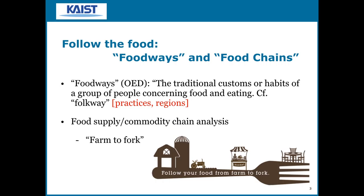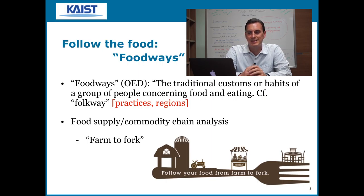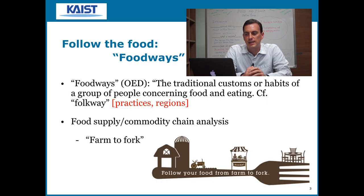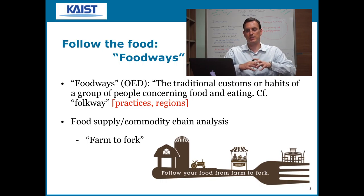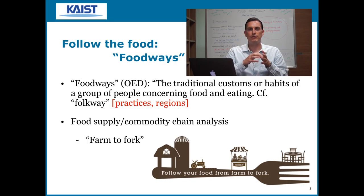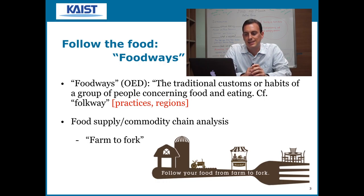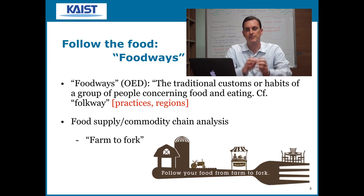You will hear terms in food studies such as 'foodways,' 'commodity chain analysis,' and 'farm to fork.' The word 'foodways' is used by anthropologists to mean the traditional customs or habits of a group of people concerning food and eating — it comes from the word 'folkway.' Its strength is that it focuses on regions, practices, habits, and customs, letting you see how food flows through a region. The disadvantage is that foodways are often treated as static, enclosed cultural practices without thinking about how they change over time.